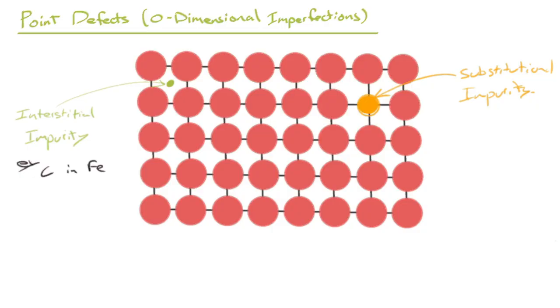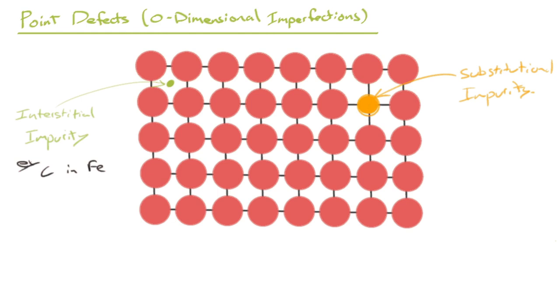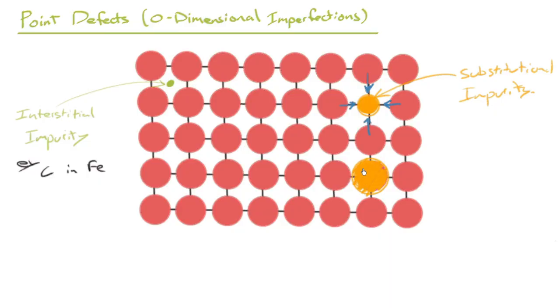You could also have as well an impurity atom that was larger. Say you had an atom that was a bit bigger than the host atoms. Then you'd have a situation sort of like this, where it's still in a lattice site, but it's now occupying more space.